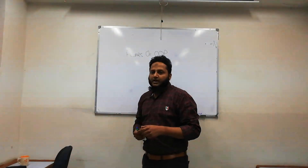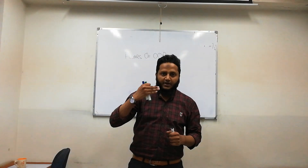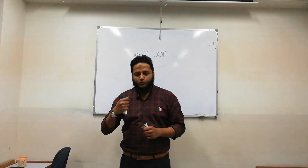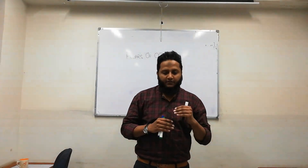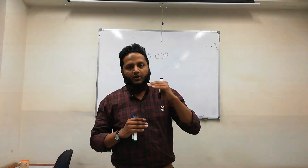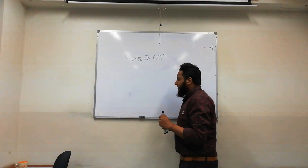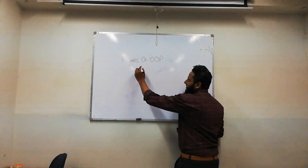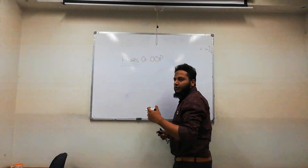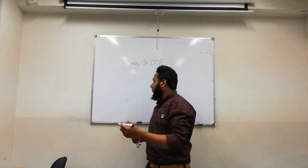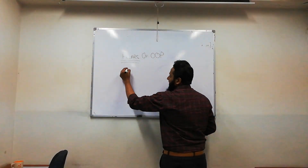When we study any concept, there are basics and a base through which we build our next structure and our whole software development structure. Because we are studying object oriented programming, it has some pillars, and pillars are the foundations of anything. So how many pillars do we have in object oriented programming?